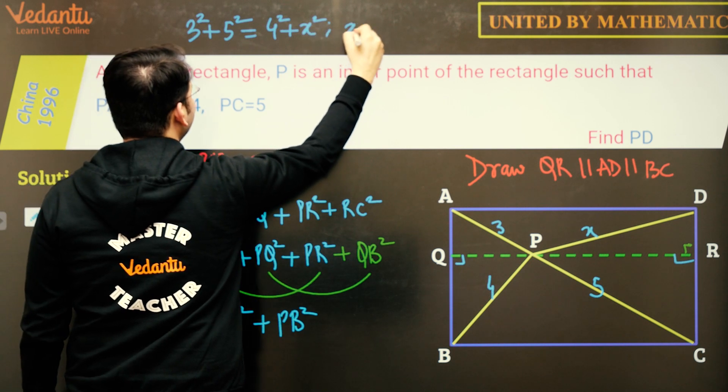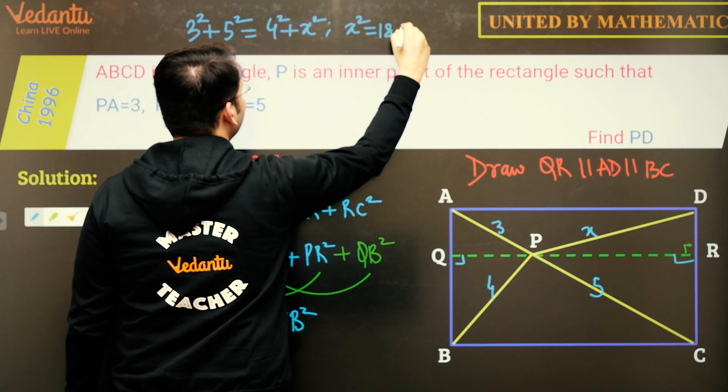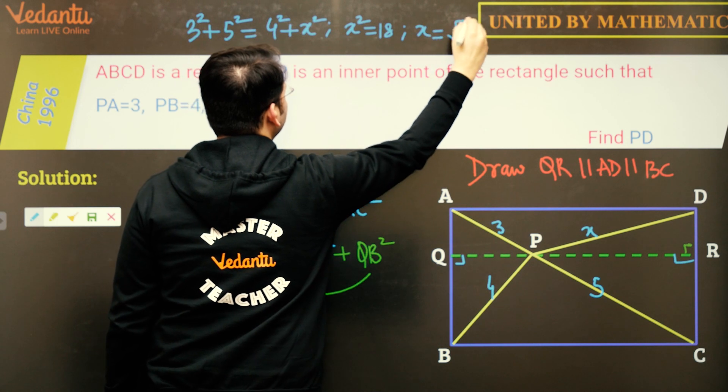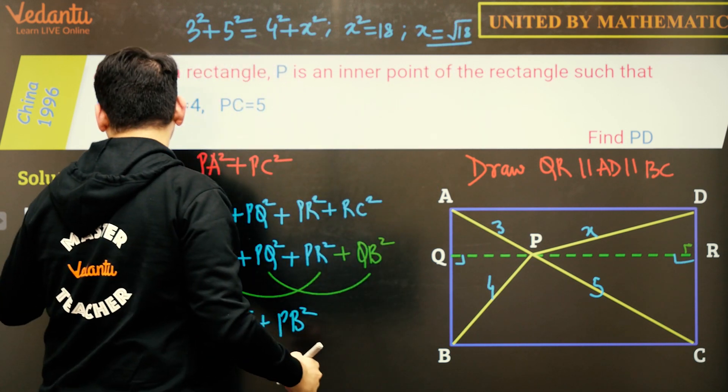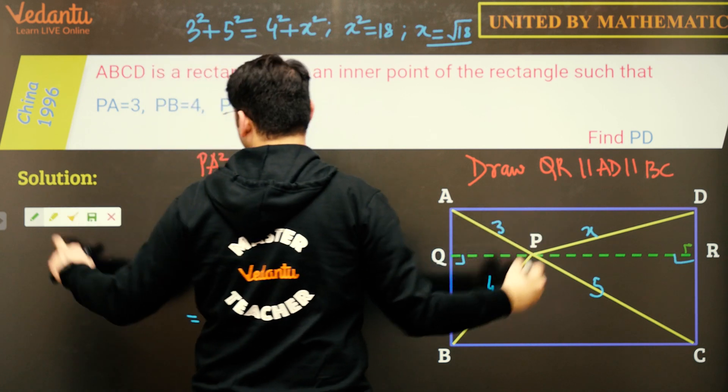And using this, X square is coming out to be 18 and X of course is square root of 18. So in this case, the value of PD is 3 root 2.